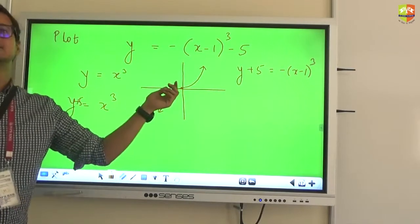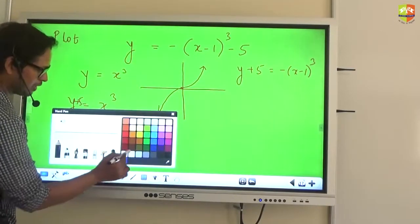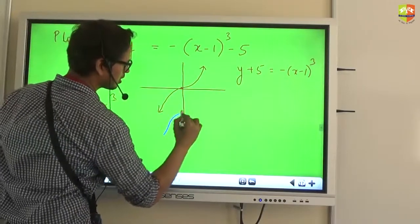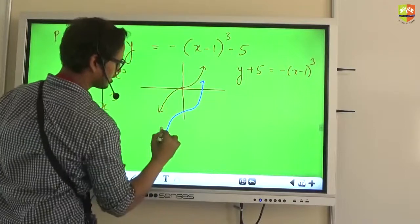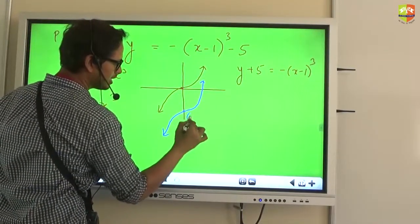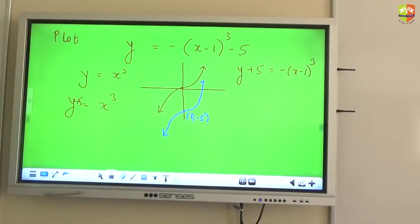That means this graph will come 5 units down. So it will look like this, correct? So this gap is 5 units down. So now this position is 0, negative 5. Is that correct?